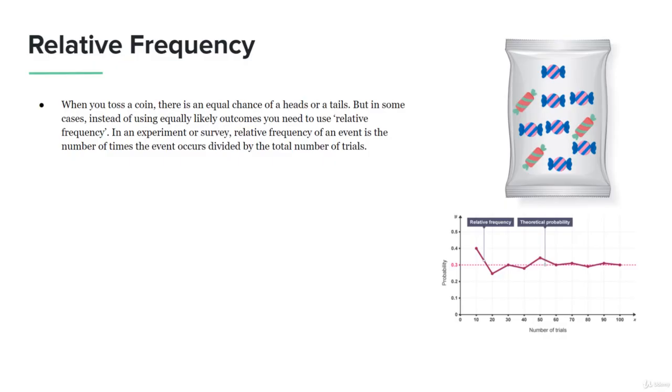When you toss a coin, there is an equal chance of heads or tails. When you have a coin with heads or tails, it's very simple to flip it and get one or the other.